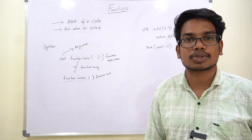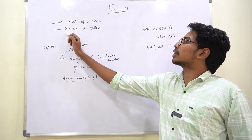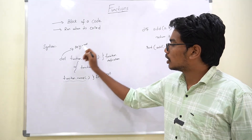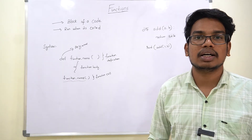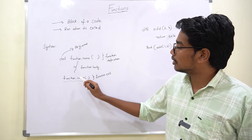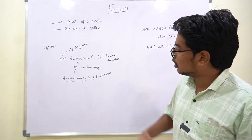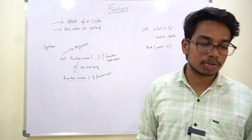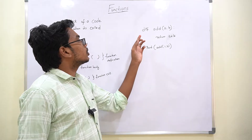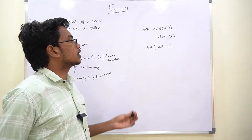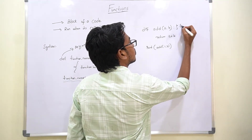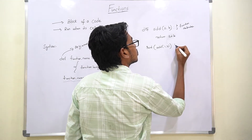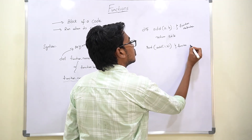In the next section, run when it is called. The function is called by function name — it reads the function name and executes it. Here is a small example: def is the keyword — that is the function definition. And this is the function call.